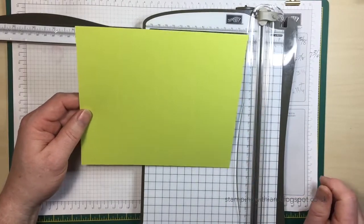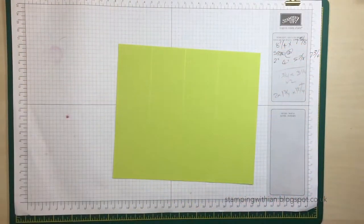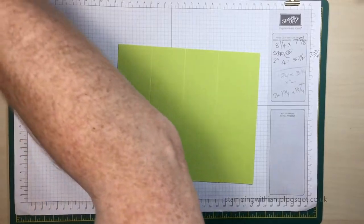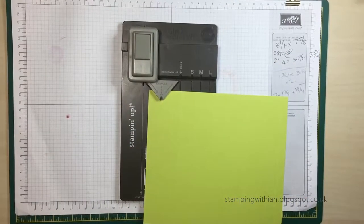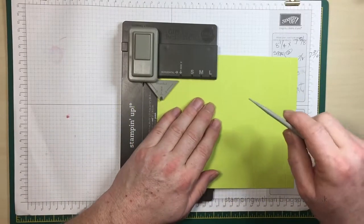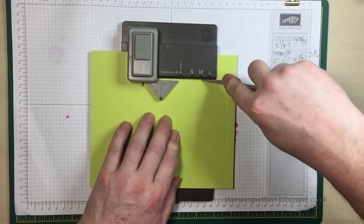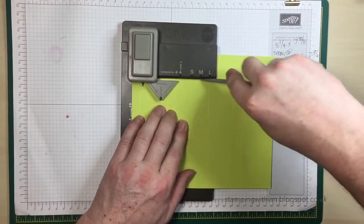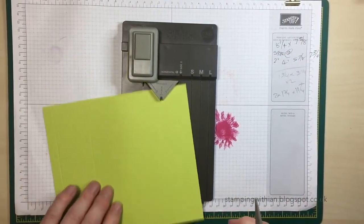Right, so the next step is we need our envelope punch board right here. First thing we're going to do is score two horizontal lines on the 6 and 7/8 edge. Just putting it in there, making sure my head's not in the way, and we just score along that, and on the other side too. Careful not to go too far along and make a hole - I've done that before.